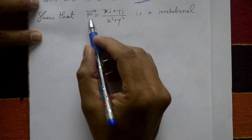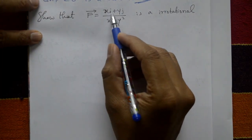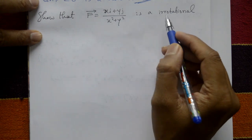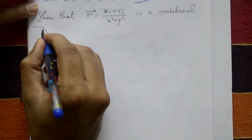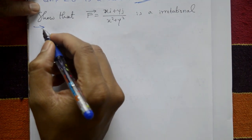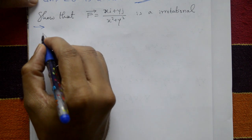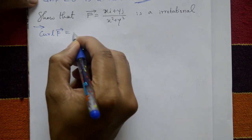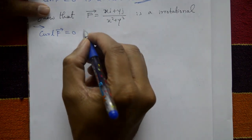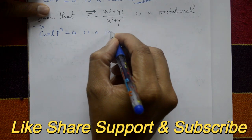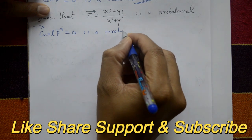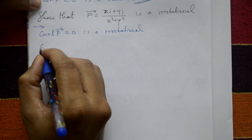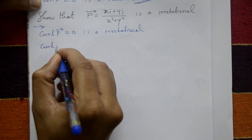Show that vector F = (xi + yj) / (x² + y²) is irrotational. Irrotational means curl of F equals zero.